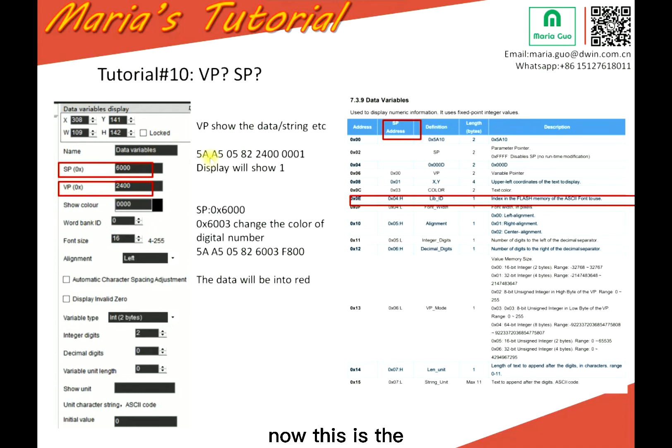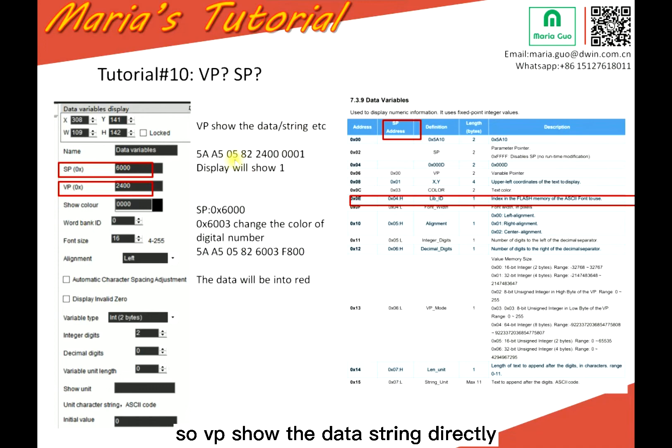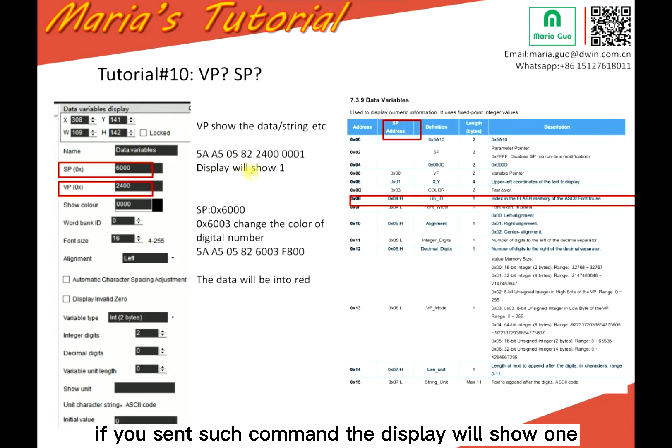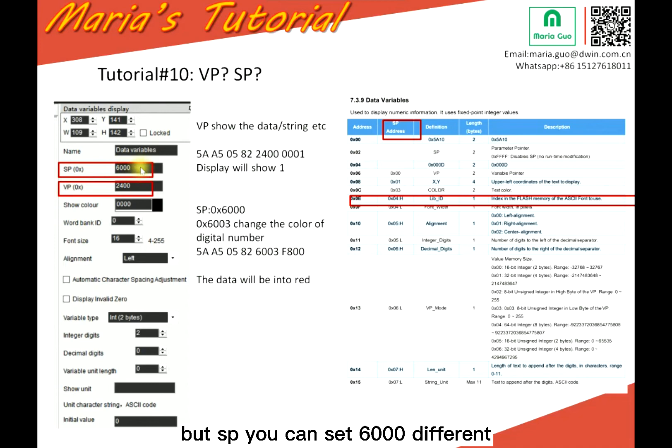Here is the example explanation. This is the VP. VP shows the data stream directly. For this example, 24 is the VP address and 01 is the data. So if you send such a command, the display will show 1. But for SP, you can set 6000 different settings. Here are the data variables — you can see the SP address.